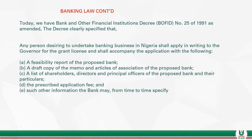The decree clearly specifies that any person desiring to undertake banking business in Nigeria shall apply in writing to the government for a license, accompanied by: one, a feasibility report of the proposed bank; two, a draft Memorandum and Articles of Association; three, a list of shareholders, directors, and principal officers with their particulars; and four, the prescribed application fee and any other information required by the Central Bank of Nigeria.